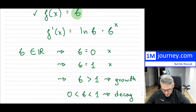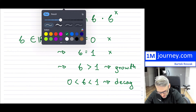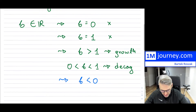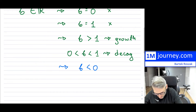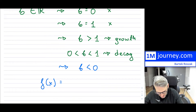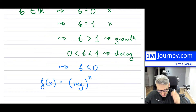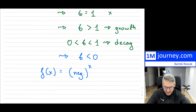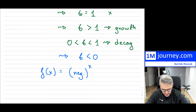There's one more case which always tripped me up: what about when b is actually less than zero? What if it's negative? That would mean we're trying to have a function with a negative b raised to some exponent x. We can certainly have a negative base raised to an exponent, but why can't we have it as a function?